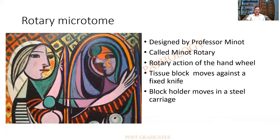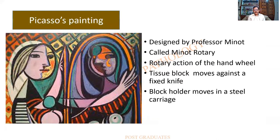A young lady once met Picasso and asked him to draw a beautiful picture of her. Though Picasso was busy, he obliged, drew the picture, and asked for a million dollars. The lady was shocked, but when it was auctioned at the art gallery, it went for a million dollars. The lesson, dear students, is that great skill like Picasso's comes with a lot of effort, sweat, practice, and perfection — all of us will not be a Picasso.